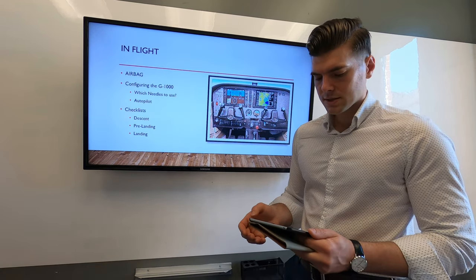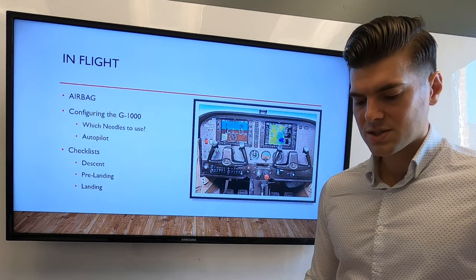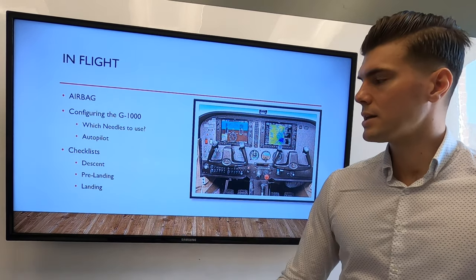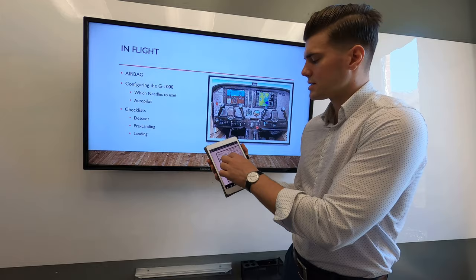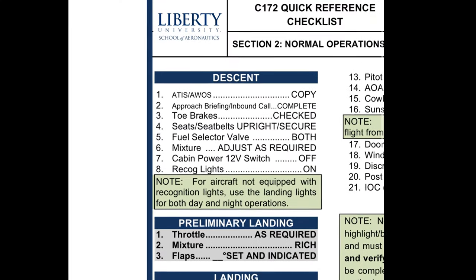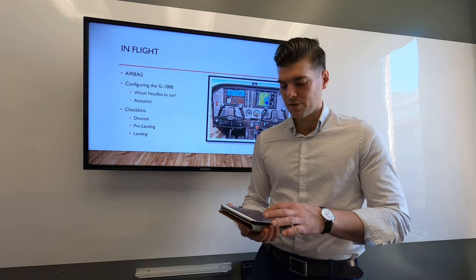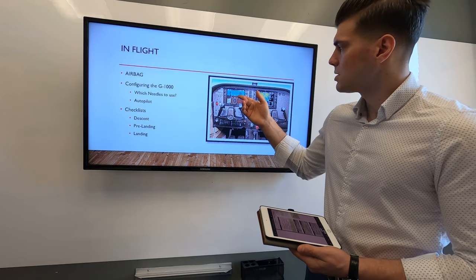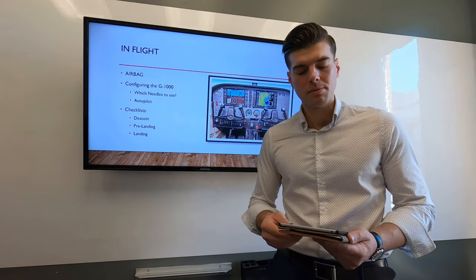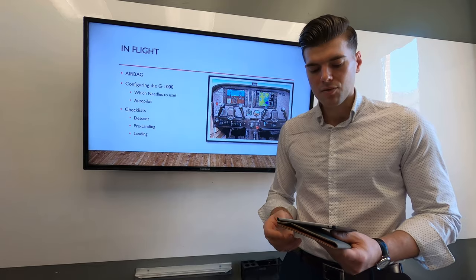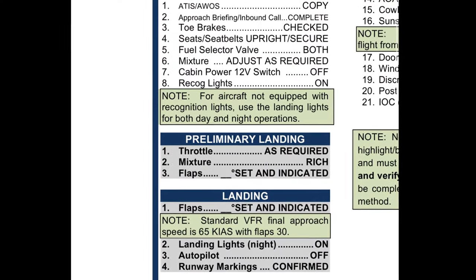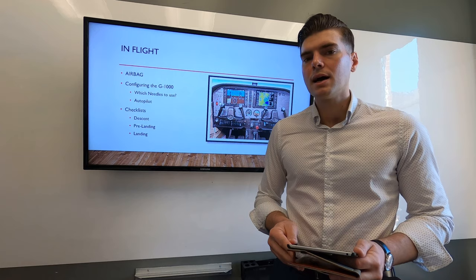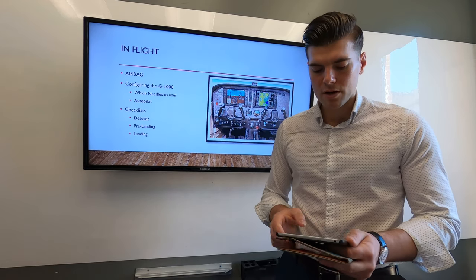For the rest of the AIRBAG checklist, the A is the approach descent checklist. We want to complete the pre-landing and descent checklists to make sure the airplane is in a position to land safely. On a precision approach, when the glide slope is one dot high, we can run the preliminary landing checklist — throttle, mixture, and flaps — to configure the aircraft, slow down to 90 knots, and prepare for descent.